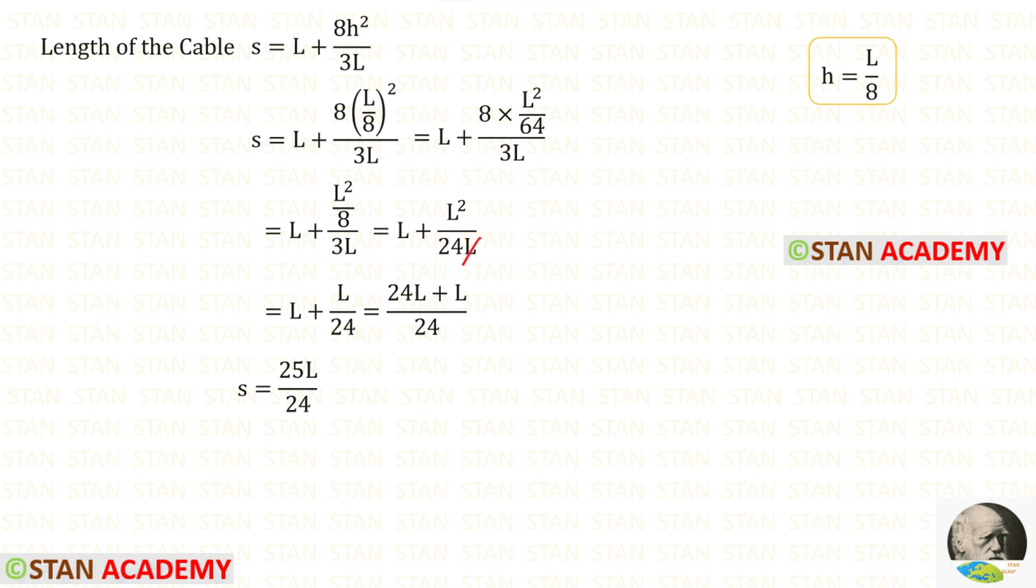We can eliminate this L and square. For both of these two terms we can take LCM. L into 24 we will get 24L. Finally for S, we will get 25L upon 24.